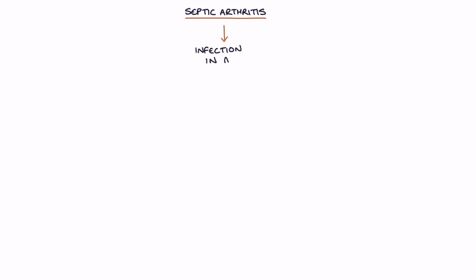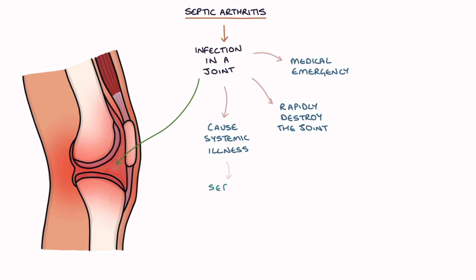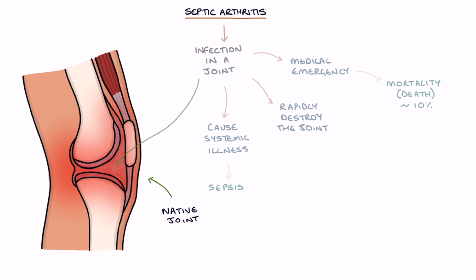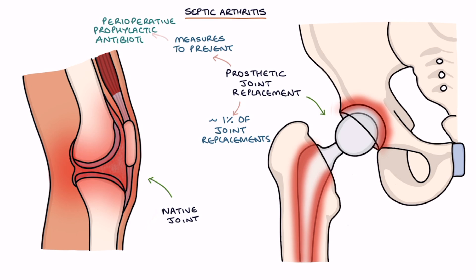Septic arthritis refers to infection in a joint. Infection in a joint is a medical emergency. The infection can rapidly destroy the joint and cause systemic illness including sepsis. It has a mortality rate — meaning the risk of death — of around 10%. Infection may occur in a native joint, meaning an original joint, or in a prosthetic joint replacement. Infection in a prosthetic joint is a big problem and happens in around 1% of joint replacements. Extensive measures are taken to prevent it, such as perioperative prophylactic antibiotics. Infection is more likely to occur in revision surgery rather than in the initial joint replacement.